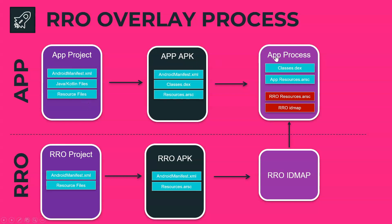During execution, the app process makes use of classes.dex and app resources.arsc to run the application. When there is an RRO in scope, the RRO resources.arsc and RRO id map are also present within the process. The RRO resources.arsc contains the overlayable resources available within the RRO APK, and the RRO id map is a table that has a one-to-one mapping of the overlayable resources.